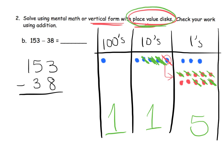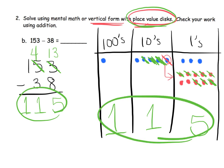Now let's do that using the standard algorithm. You have 3 ones and need to take away 8 ones, so we're going to unbundle — take 1 of those 5 tens, leaving 4 in the tens column, and that takes the 3 in the ones column and makes it 13. So we now have 13 ones. 13 take away 8 leaves us 5. Then 4 tens take away 3 tens leaves 1 ten. And 100 take away no hundreds leaves 100. So in both cases our answer is 115.